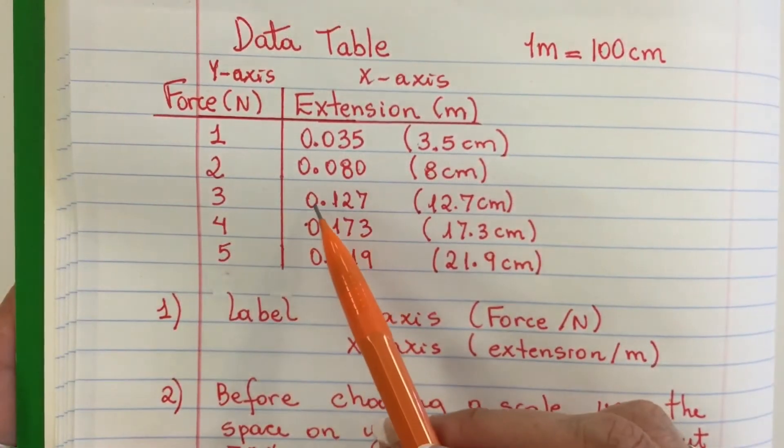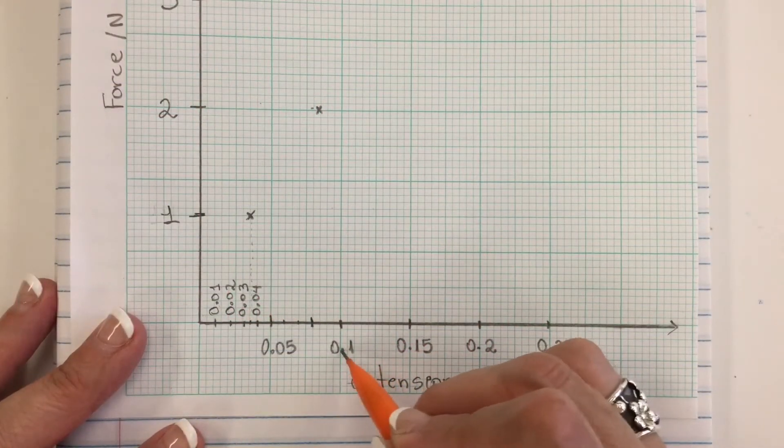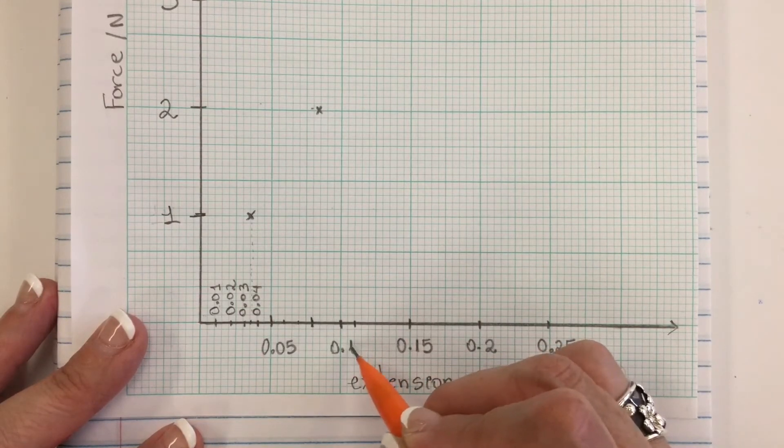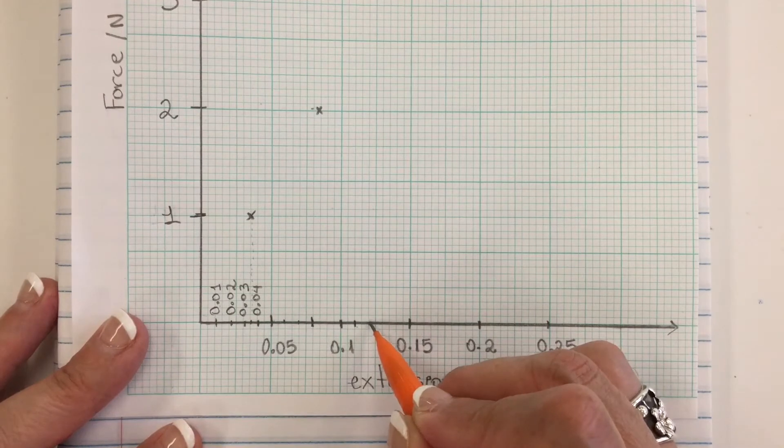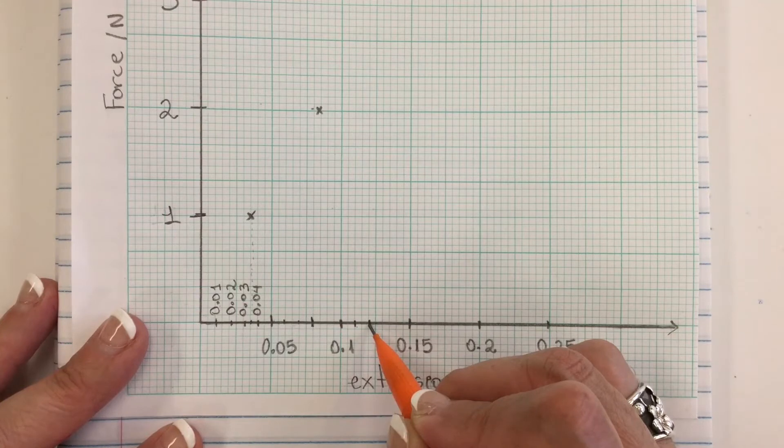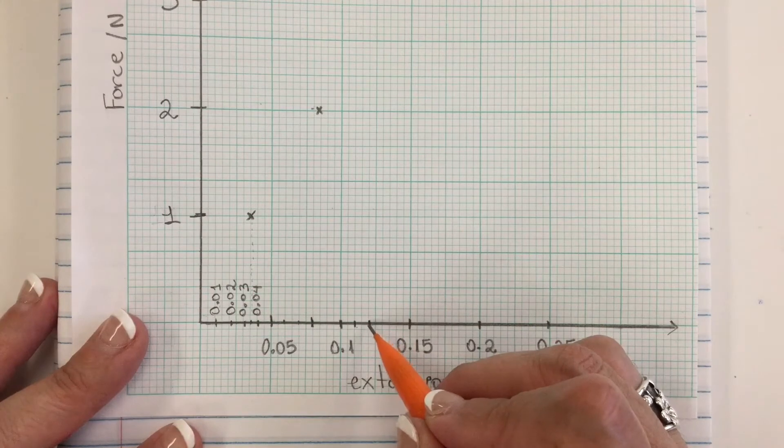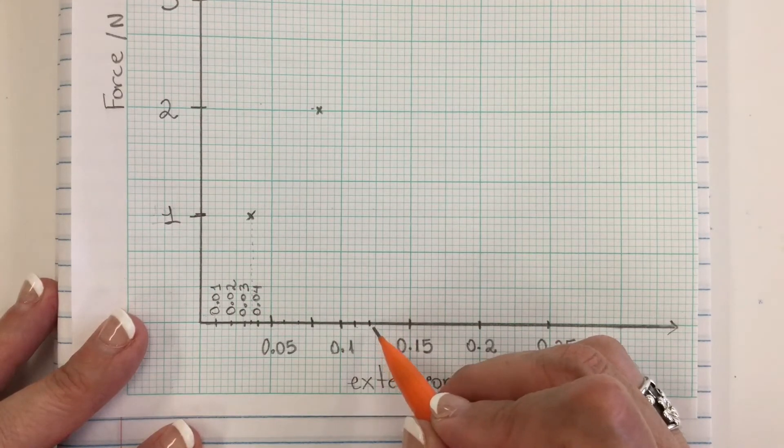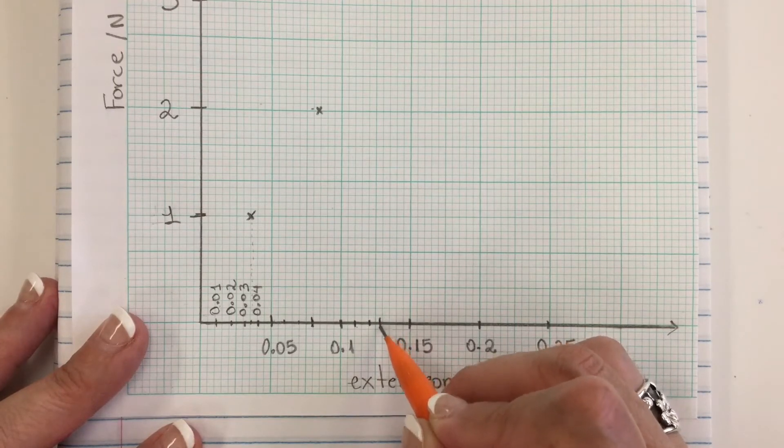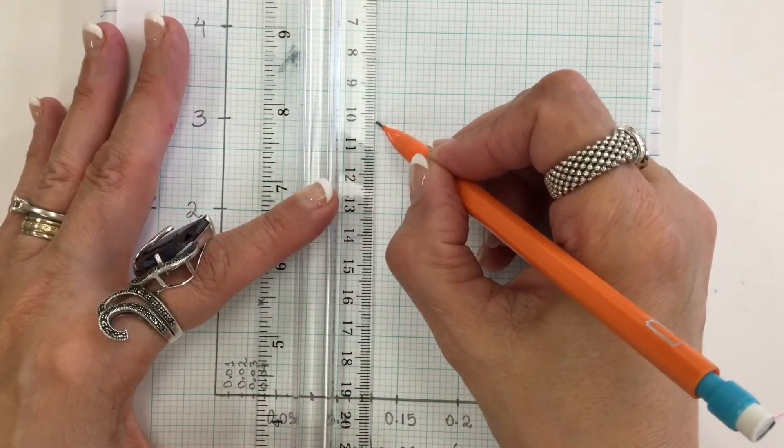My next number is 0.127, so this is 0.01, so those two here will be 0.011, this is 0.12, and I'm looking for 0.127, so it will be very close to 0.13, so it will be close to this but not there, so I will mark this one. So that will be my next intersection.